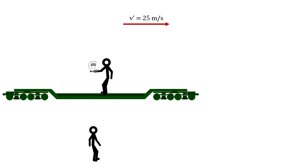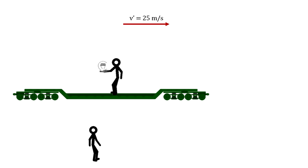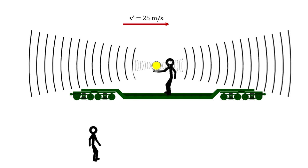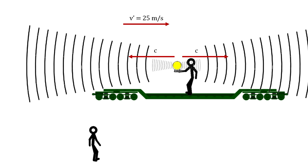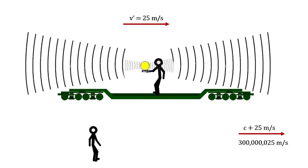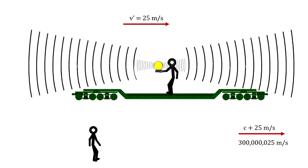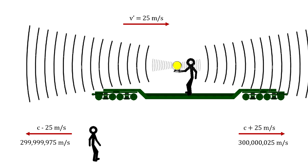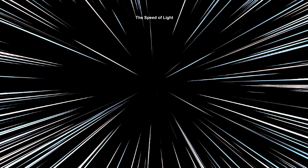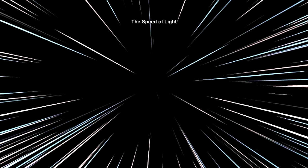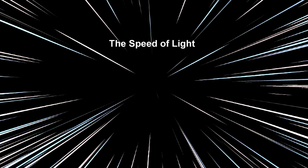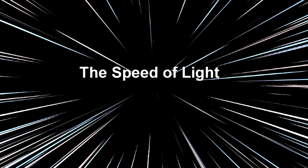It followed that if it were a light bulb that the person on the train turned on, he would see the light moving in the direction of the train and the light moving in the opposite direction to be the same speed of light. But the person on the ground would measure the light moving with the train at 25 meters per second faster than that, and the light traveling against the movement of the train at 25 meters per second slower. This view stood the test of time from Galileo until the mid-1800s, because no one could measure the speed of light, and no one had instruments sensitive enough to measure the small differences in the speed of light.